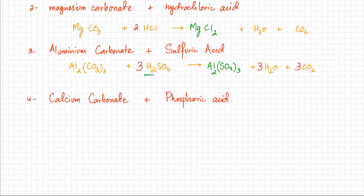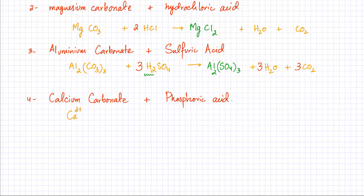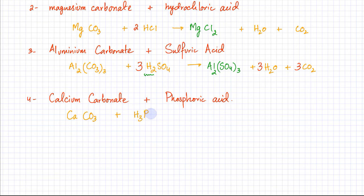Now the fourth example: calcium carbonate reacting with phosphoric acid. Calcium is in group 2, so it has a charge of 2+. Carbonate is CO₃ with a charge of 2−. The charges cancel, so the formula of calcium carbonate is CaCO₃. It's reacting with phosphoric acid, H₃PO₄. The products are a salt, a water molecule, and carbon dioxide gas.